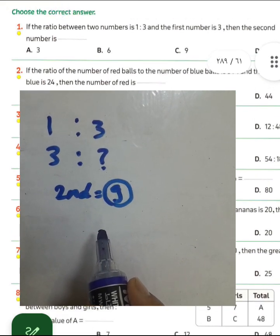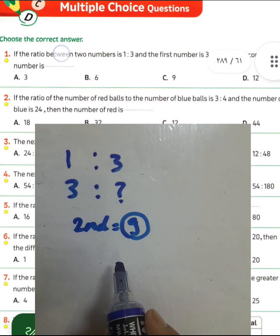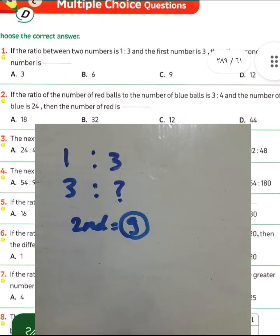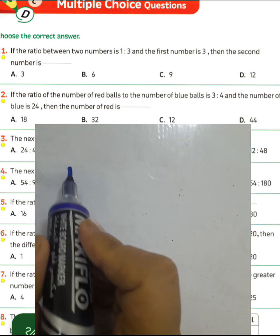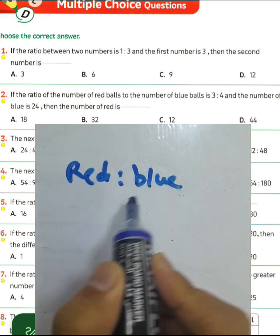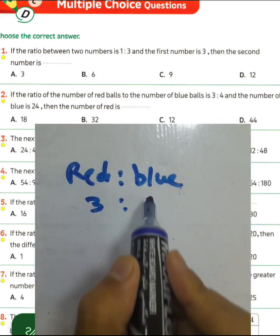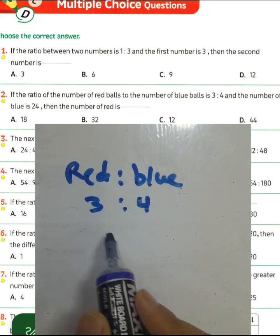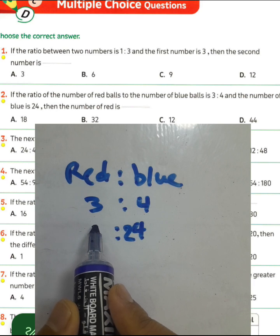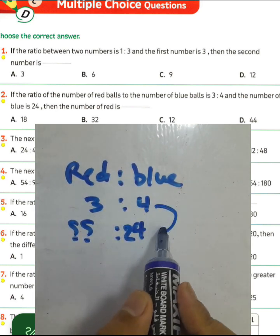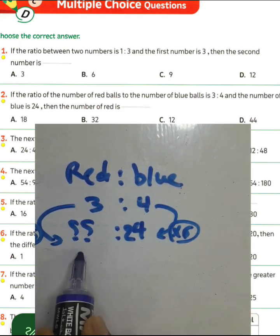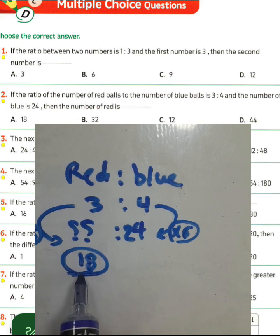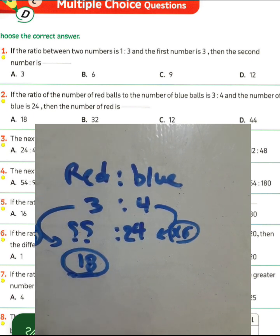Question number two: the ratio of the number of red balls to the number of blue balls is three to four. The number of blue balls is 24 — what is the number of red balls? We know four multiplied by six equals 24, and three multiplied by six equals 18. So the number of red balls is 18. Choose letter A.